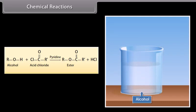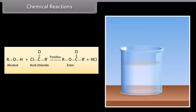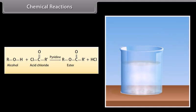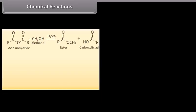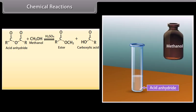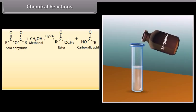Alcohol reacts with acid chloride in the presence of pyridine to form ester and hydrochloric acid. Methanol reacts with acid anhydride in the presence of sulfuric acid to form an ester and a carboxylic acid.